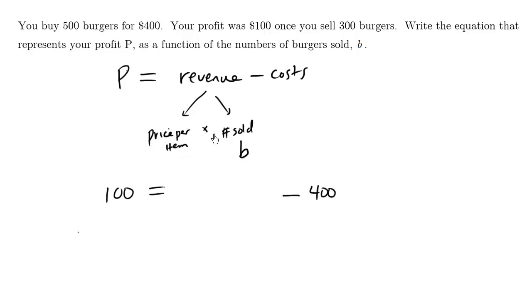Now the key here is that you are selling 300 burgers. The number of items sold, B, is 300. So we'll just say 300 times the price per item.